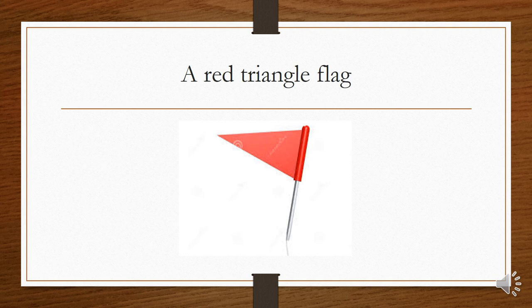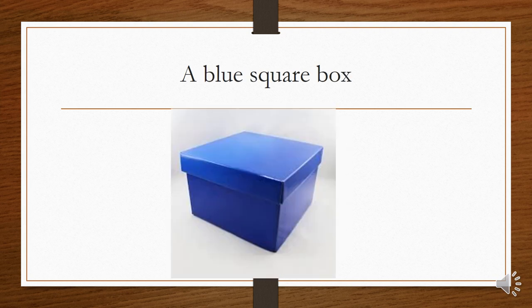Good, good, a red triangle flag. Next, this is a box. The box looks so cute, maybe there's a present inside the box. It's blue and it's square, so I will describe this box: a blue square box. Together children.